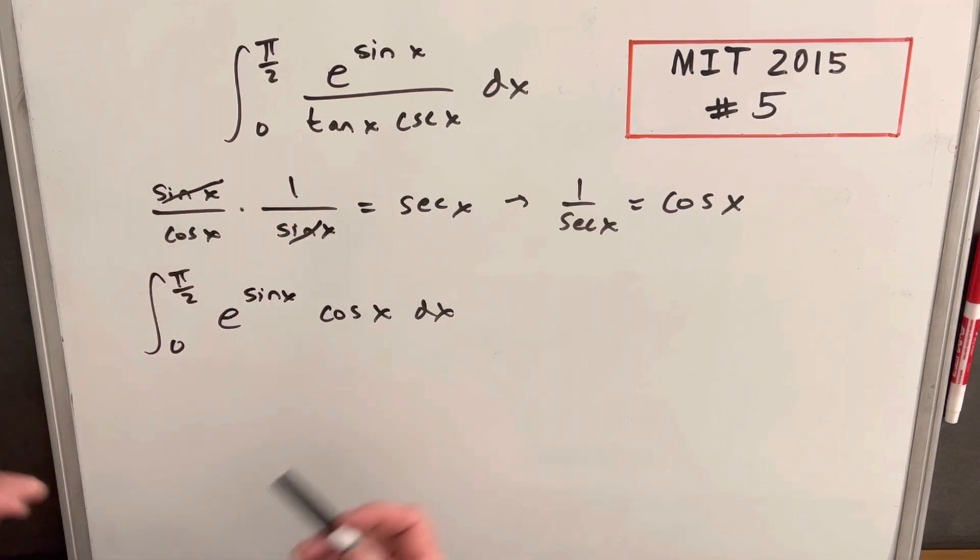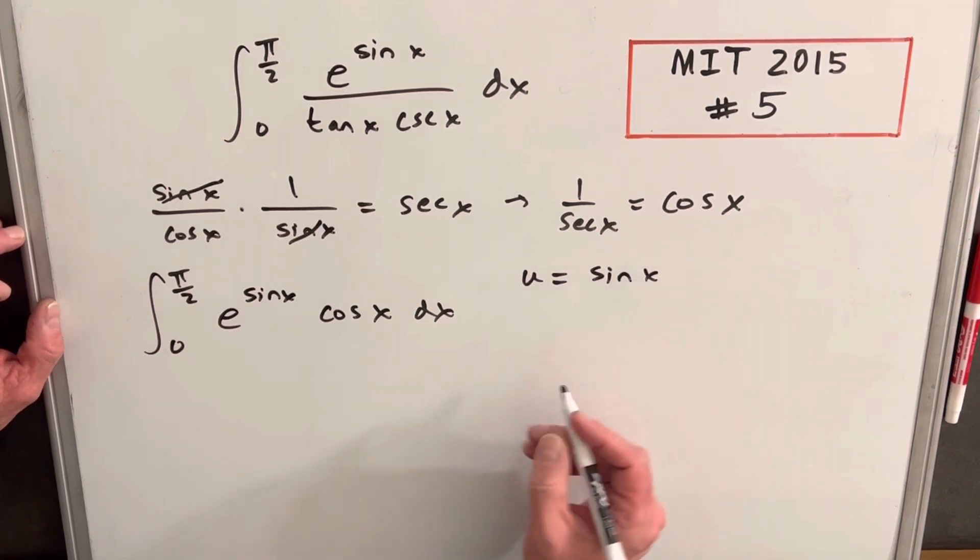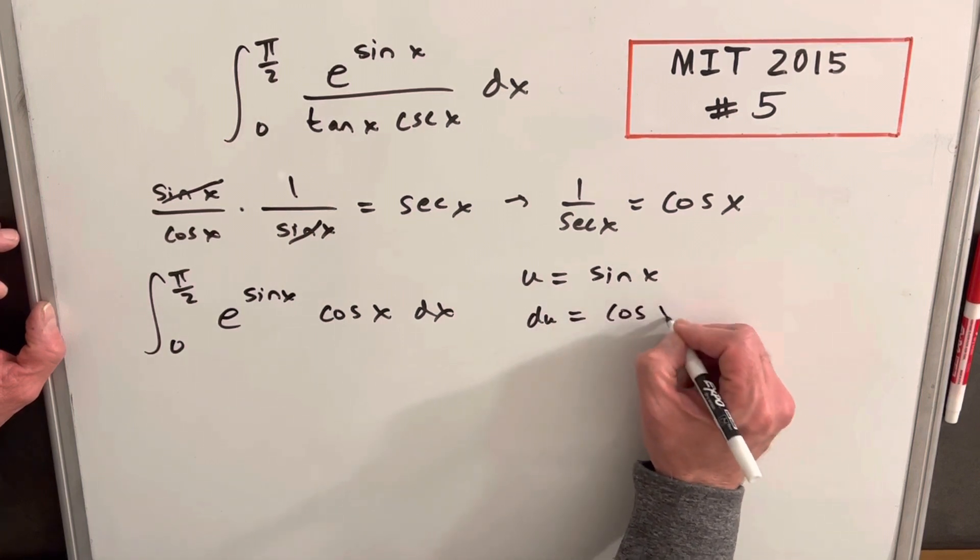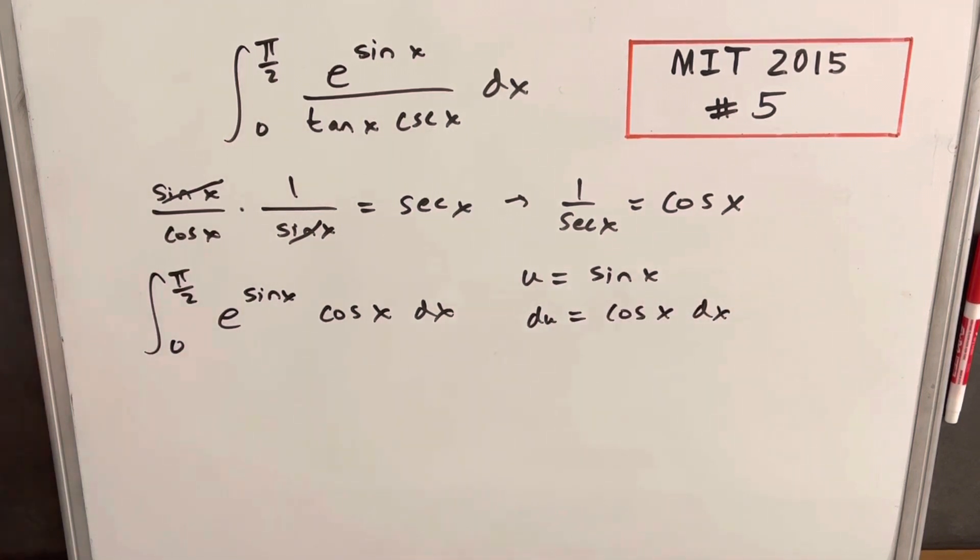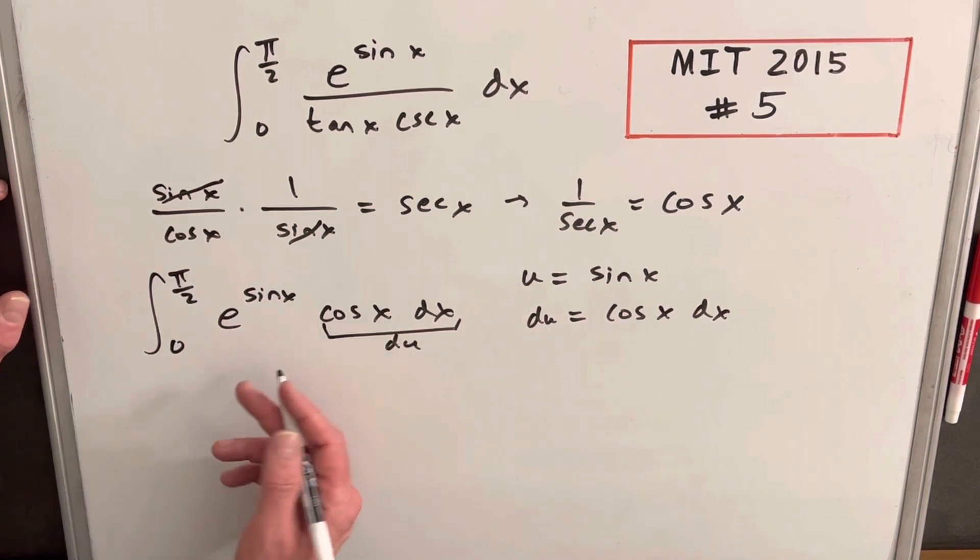But we can handle that with a u substitution. Now we have cosine x right here. So what I'm going to do is say u is equal to sine x. Take our derivative, du is going to be cosine x dx. We have our du right here, so let's make this substitution.